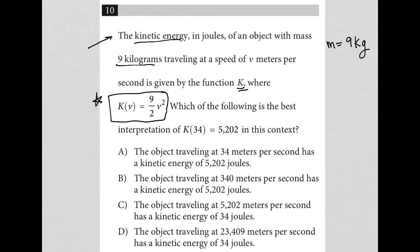Which of the following is the best interpretation of K of 34 equaling 5,202? So again, K represents kinetic energy. This 34 here is replacing this V here. V represents the speed.